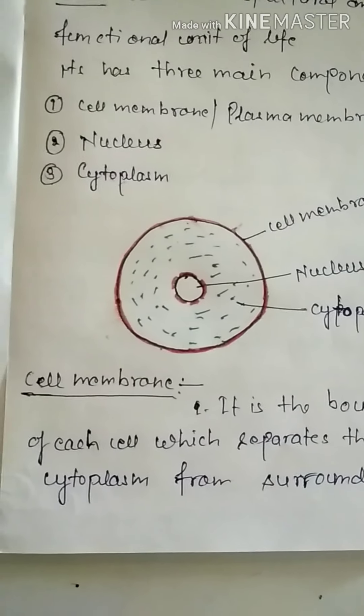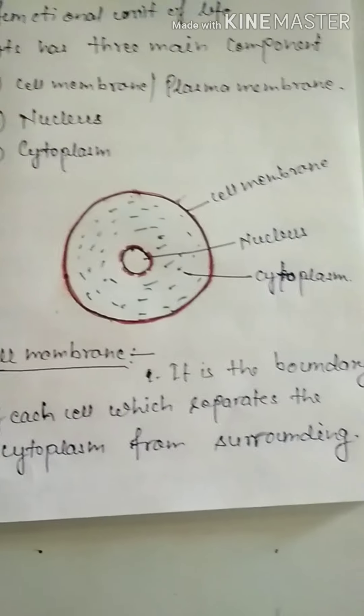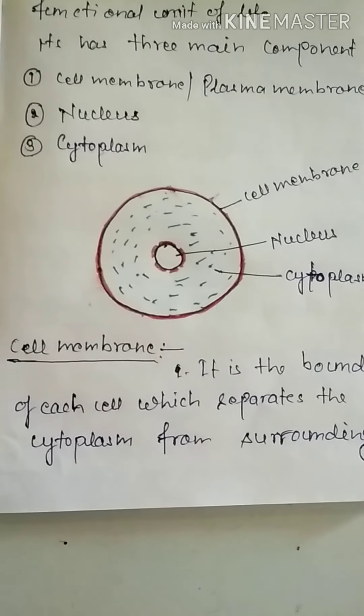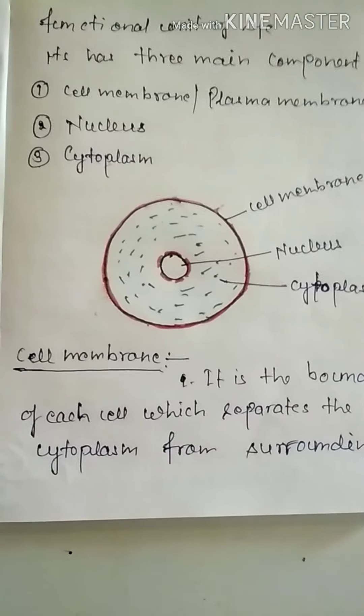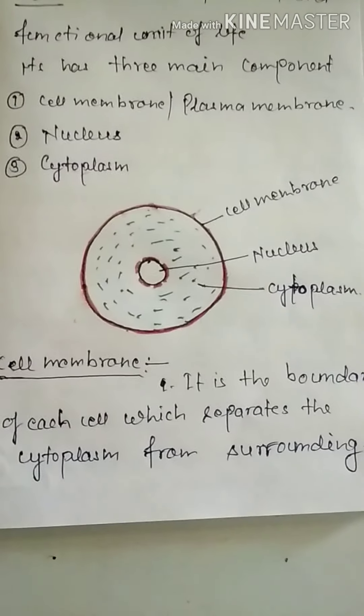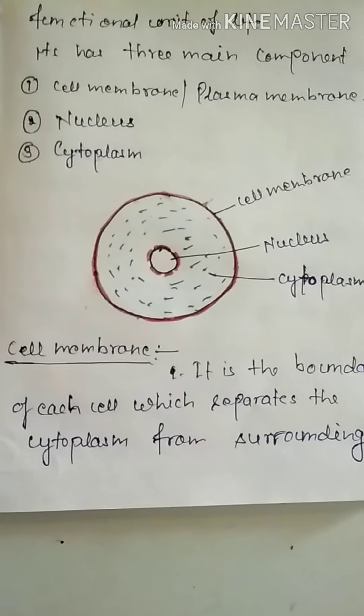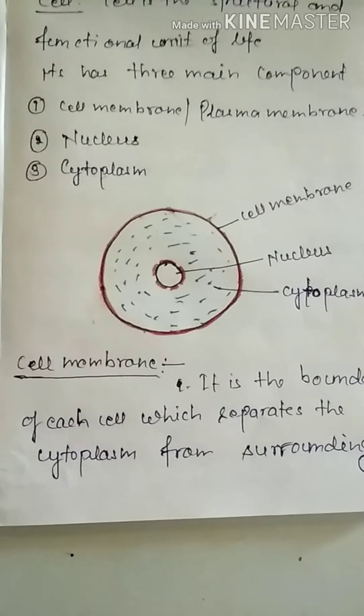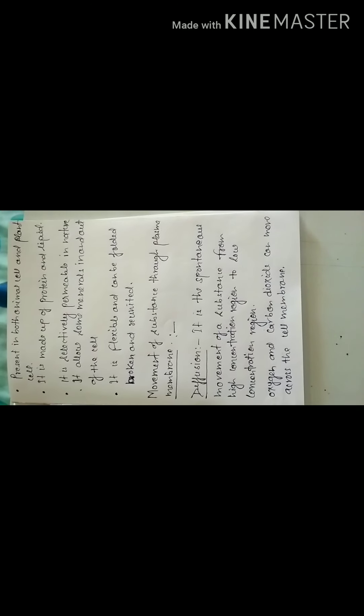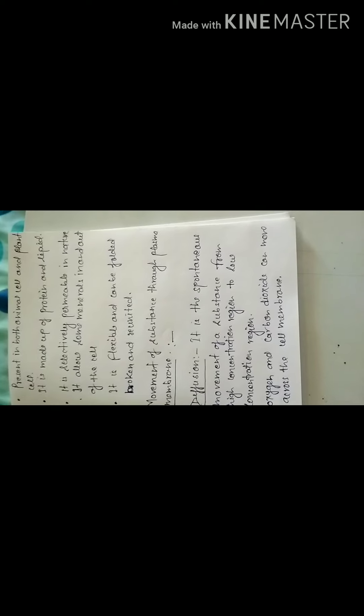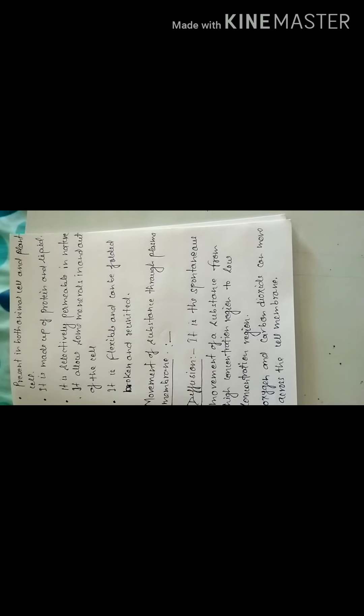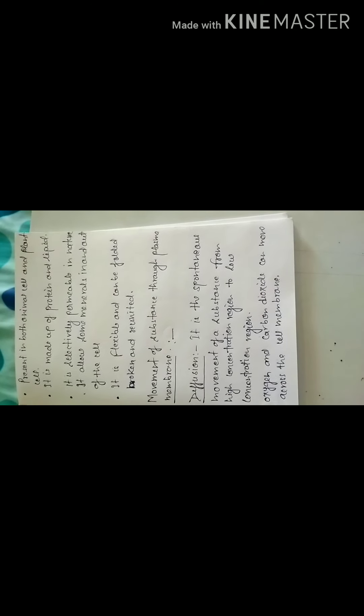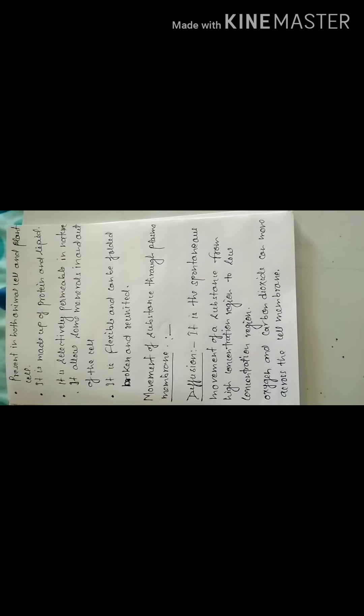Cell membrane is the boundary of each cell which separates the cytoplasm from surrounding. It means cell membrane is the outer covering of the cells present in both animal cells and plant cells. It is made up of protein and lipids.